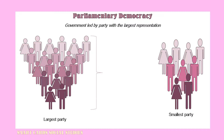In a parliamentary democracy, the ruling party or the party with the largest representation, as voted in by the citizens, controls the government as well as the laws that govern society. The ruling party chooses the chief executive officer. However, the judicial system is independent of the other two branches of government.